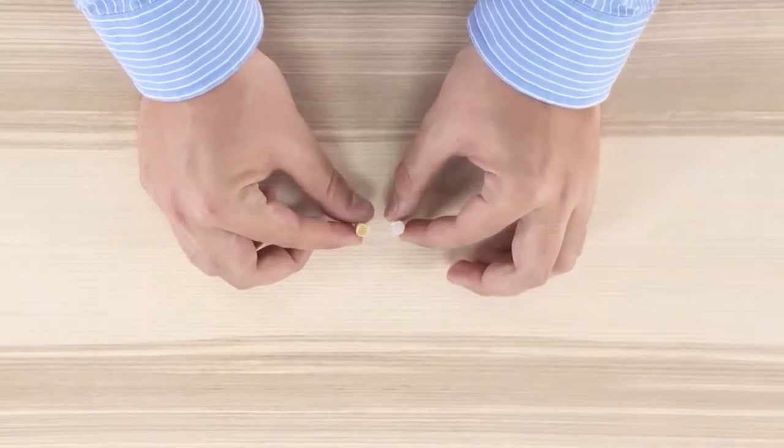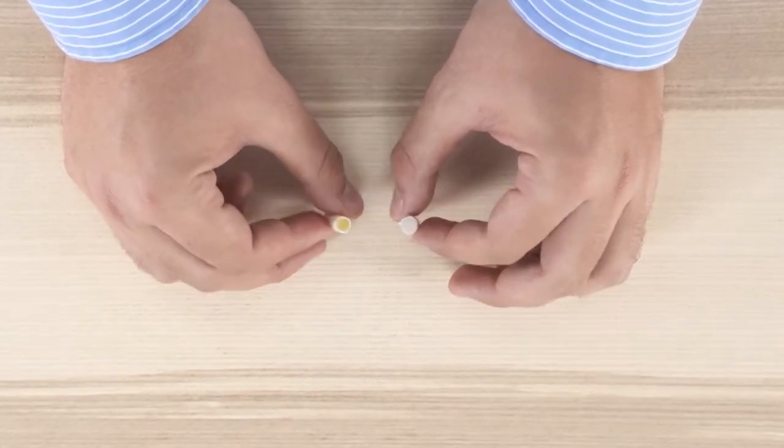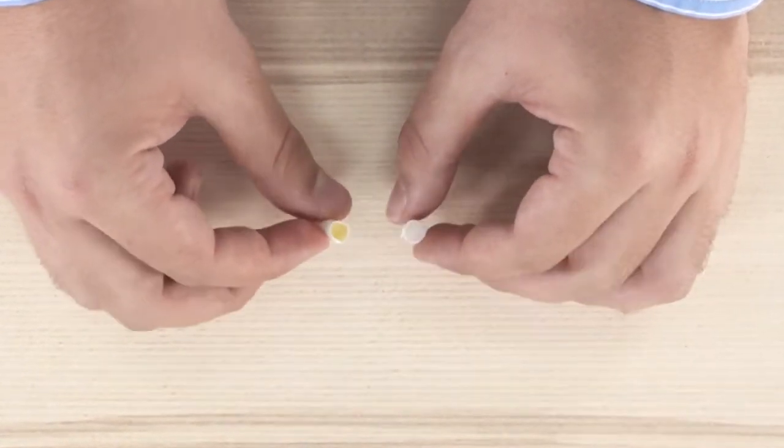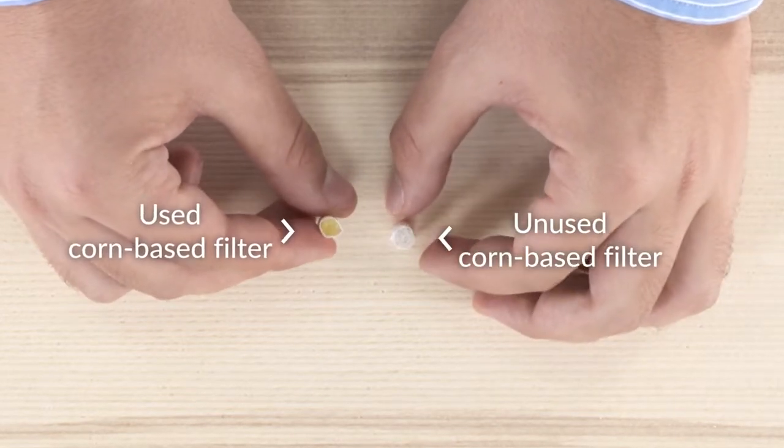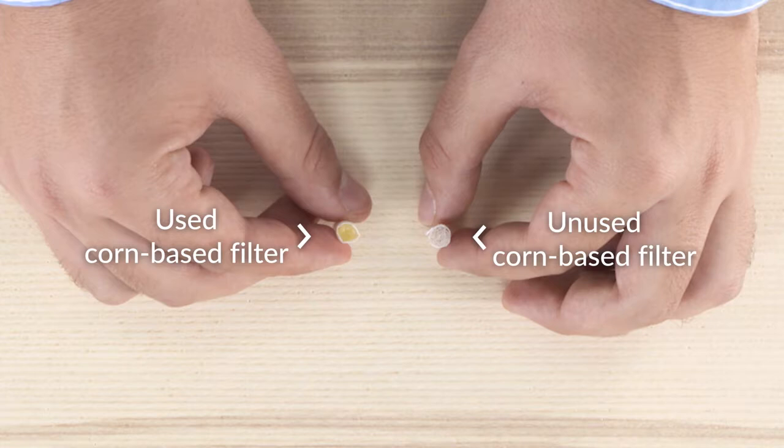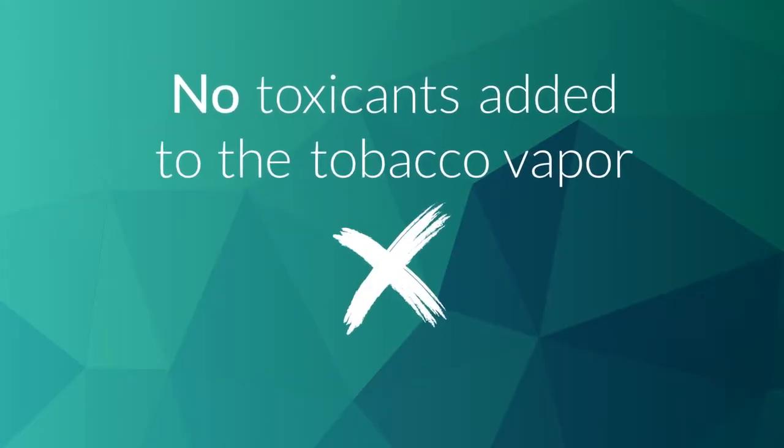The change in colour and texture of the filter after use is a natural change as the cornstarch molecules react to the initially warm aerosol passing through it while it cools the vapour and removes the excess water. There are no toxicants added to the tobacco vapour.